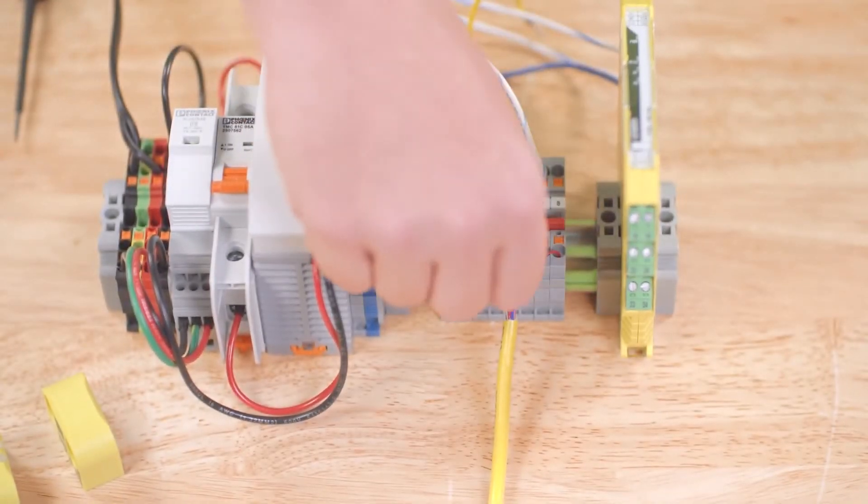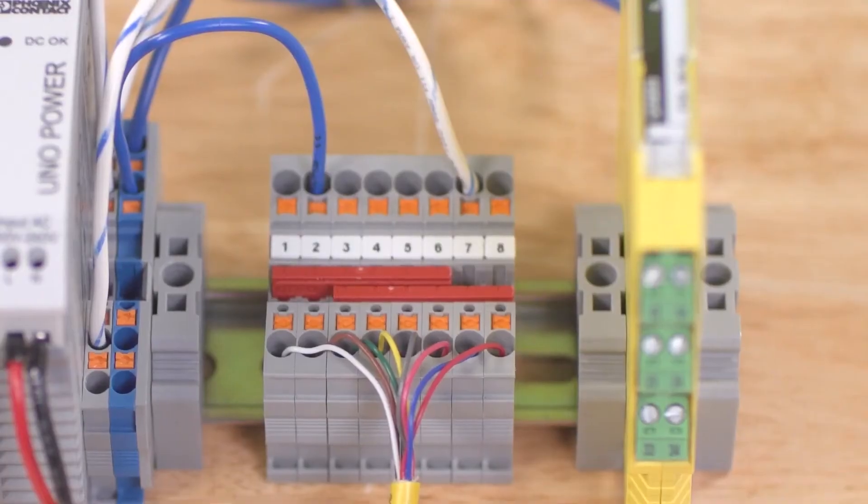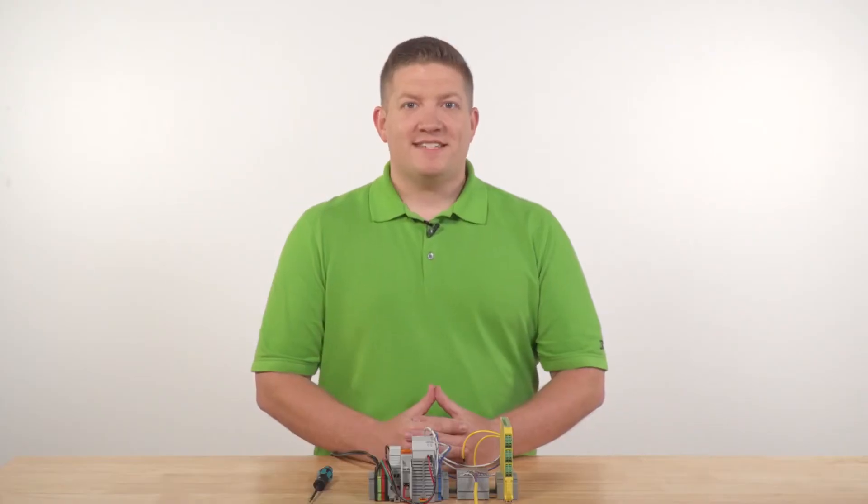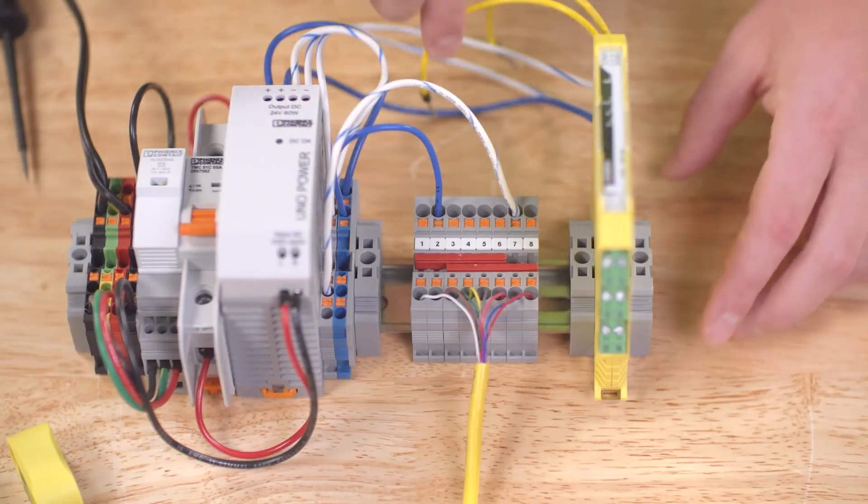Next, for the automatic start-up behavior, the sensor expects a clock signal from the F-O-1A safety output, so we'll jumper pin 8 to pin 3 using this bridge. If this connection is not present at power on, the sensor will expect a manual monitored reset into pin 8 instead.